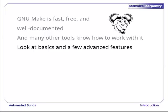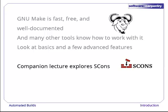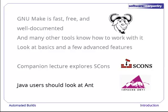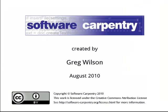In this lecture, we'll look at Make's basic features and a few of its advanced facilities as well. A companion lecture to this one explores a newer build manager called Scones — it is more powerful and more flexible than Make, but isn't nearly as widely used, at least not yet. Java users should also look at Apache Ant, the standard build manager for Java. It hides many of the platform-specific details that Make would require, but requires users to write XML files to get things done. And now, on to Make.